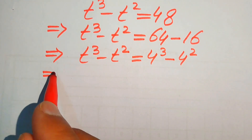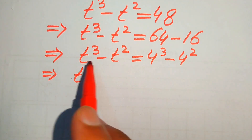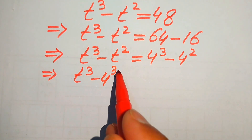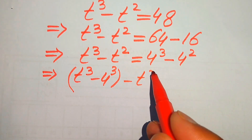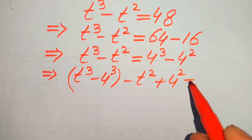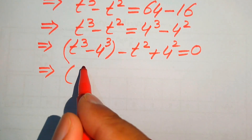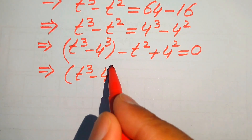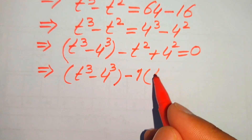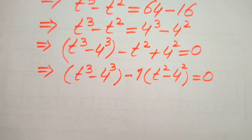In the next step we move the terms from the right hand side to the left hand side. We make the pair of t cubed with 4 cubed — the positive term becomes minus 4 cubed when moved over. We have minus t squared and minus 4 squared; when moved to the left hand side it becomes plus 4 squared. So we get t cubed minus 4 cubed, then taking out negative 1 common, we get minus (t squared minus 4 squared) equals 0.